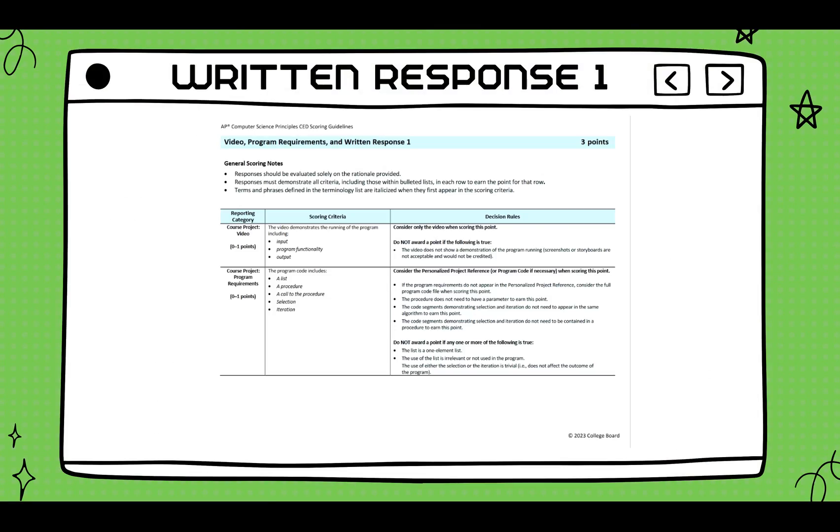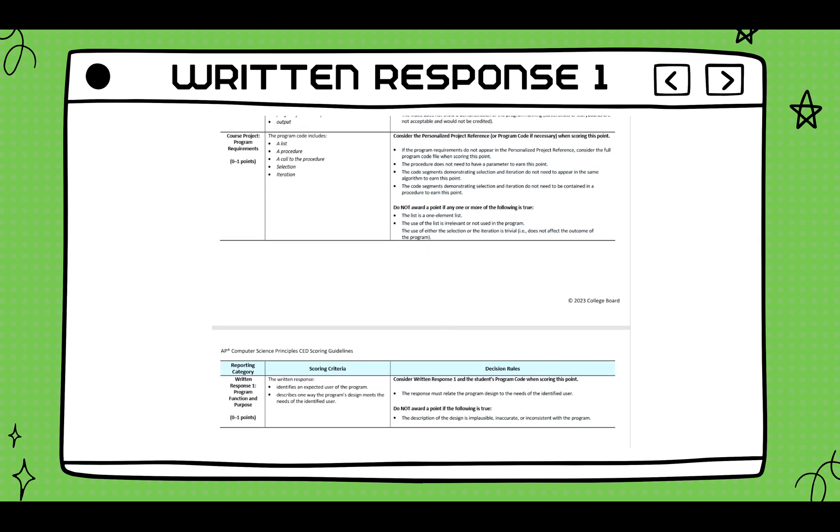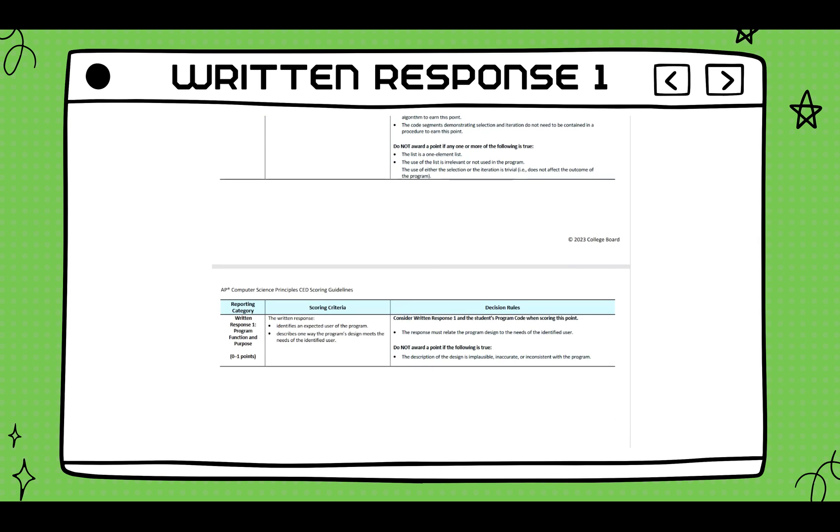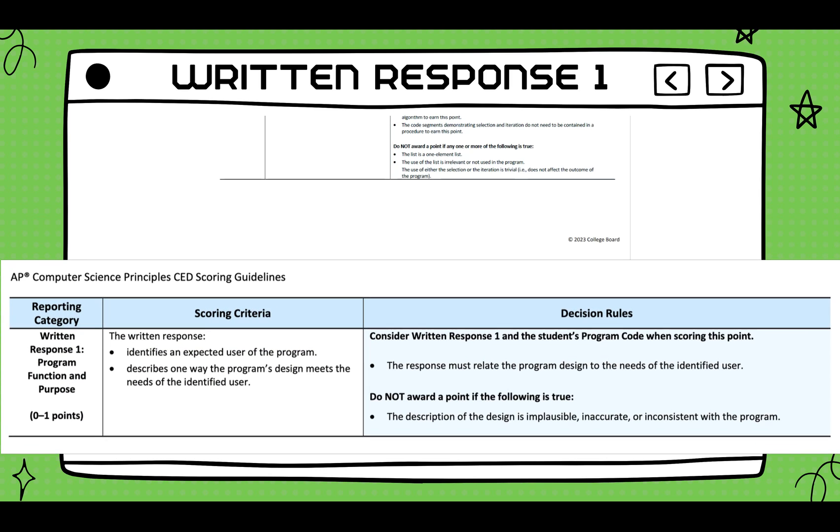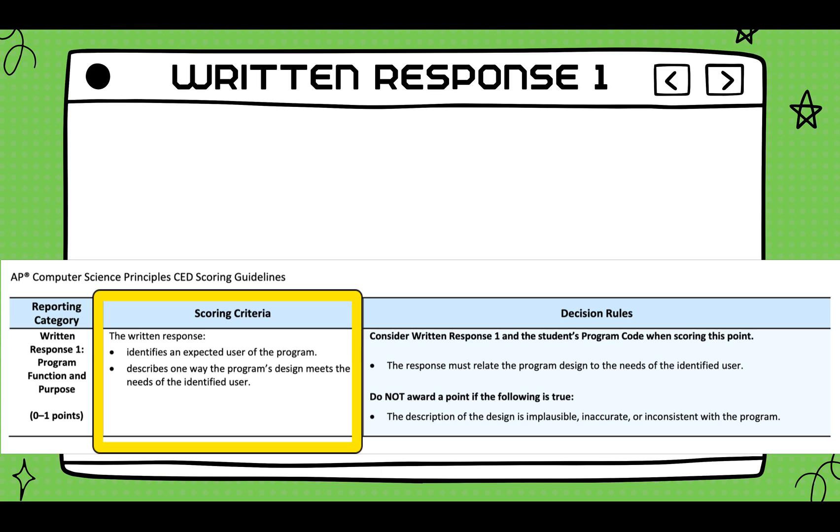Let us start with the bottom of page one of the rubric. That is row number three, program design, function, and purpose. This deals with the app you submitted to your digital portfolio. The scoring criteria wants you to be able to identify an expected user of the program and describe one way the program's design meets the needs of the identified user.